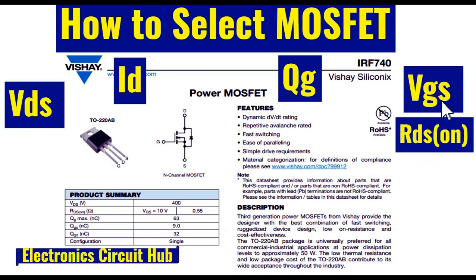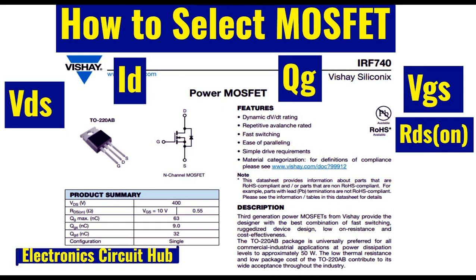What is RDS_on? RDS_on is basically the on-resistance of the MOSFET drain to source — the drain-to-source resistance of the MOSFET when it is on. Why is RDS_on important? Because if your MOSFET is on, there is a power loss across the MOSFET drain to source, governed by: Power loss = RDS_on × ID². That's very simple.